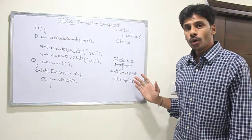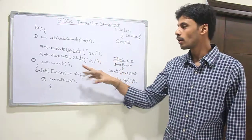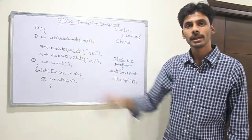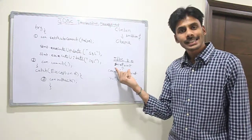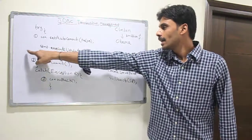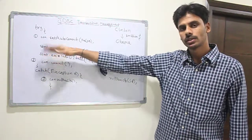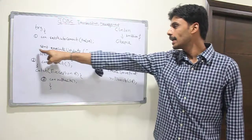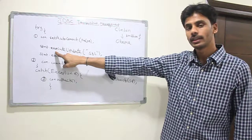JDBC 3.0 uses save point, which allows you to roll back to a certain location. Instead of rolling back all the SQL DML changes, if you have 100 DML statements, you can create a save point at any location. If you want to roll back only up to here when something wrong happens, you can create a save point right here using connection.createSavePoint in between these two statements.